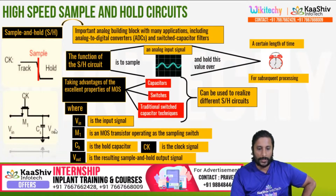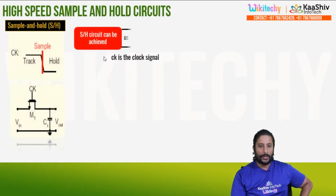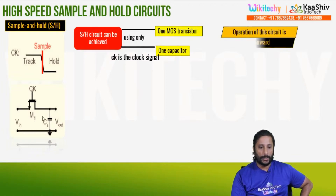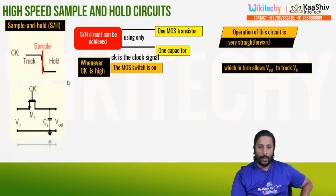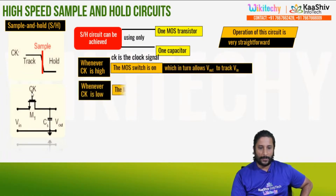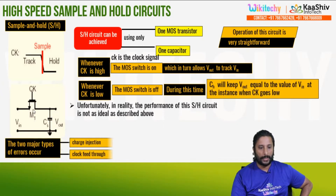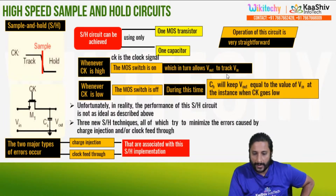The resulting sample and hold circuit: in the sample and hold circuit, you achieve one MOS transistor and one capacitor. When the clock signal is high, the MOS switch is on. When it is high it is on; when it is low it is off. When off, it tracks V-in.